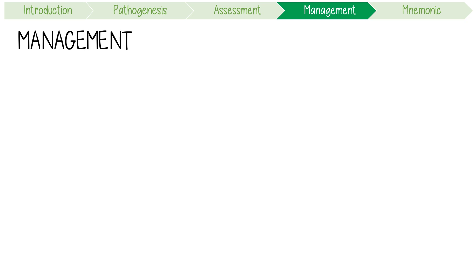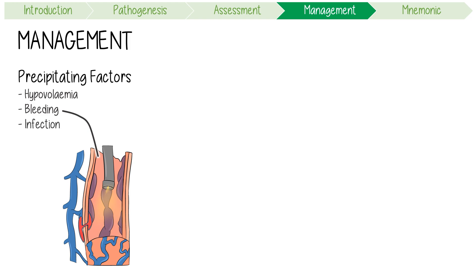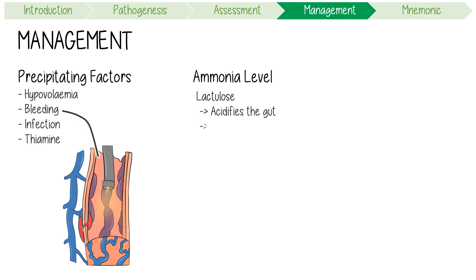Management of HE revolves around two things. Firstly, identifying and correcting precipitating factors — resolution of issues like hypovolemia, bleeding from varices, or treating infections can rapidly improve overt HE. Don't forget that people with cirrhosis are also prone to deficiencies in water-soluble vitamins, especially thiamine. Secondly, reducing a patient's ammonia level is really important. Lactulose, usually given three or four times daily, acidifies the gut and makes ammonia harder to absorb, with dosing titrated to aim for about two or three stools per day.